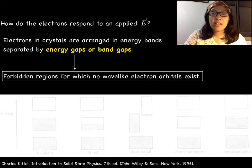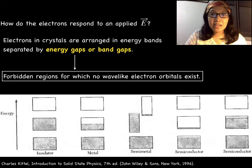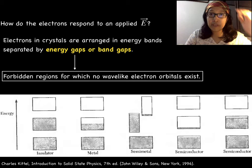Band gaps result from the interaction of electron waves with the positive ion cores of the crystal. Here is a schematic showing how electrons occupy the allowed energy bands for an insulator, metal, semi-metal, and semiconductor. The vertical extent of the boxes indicate the allowed energy regions.